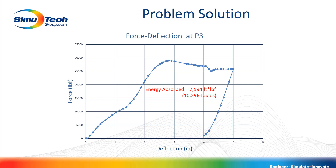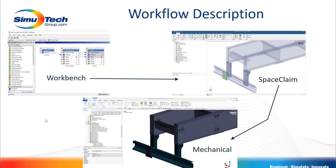You could potentially use the ANSYS Mechanical simulation to eliminate multiple iterations of bench testing, saving thousands of dollars. The workflow starts in the Workbench project schematic page, where we connect a series of different analysis environments controlling the flow of information. We set up a geometry system for cleanup and simplification in SpaceClaim Direct Modeler, then pass it to ANSYS Workbench Mechanical for material assignment, connectivity, meshing, loads, boundary conditions, solution, and post-processing.